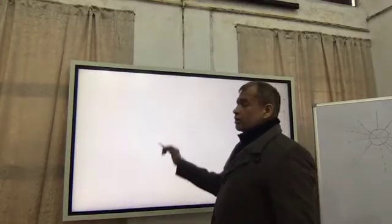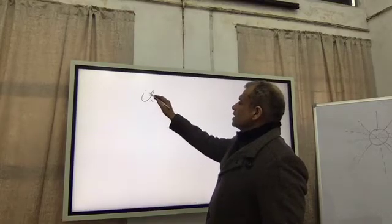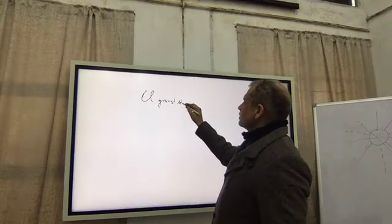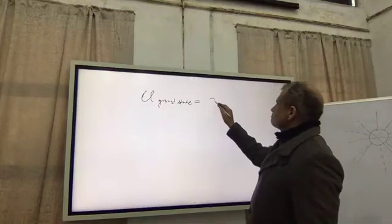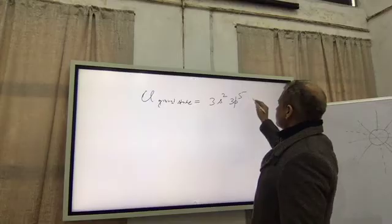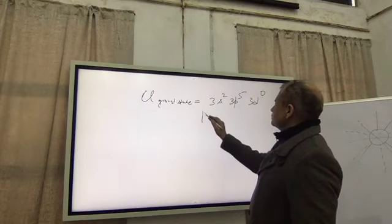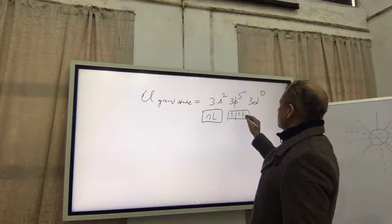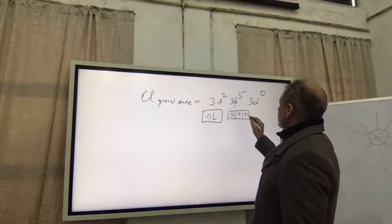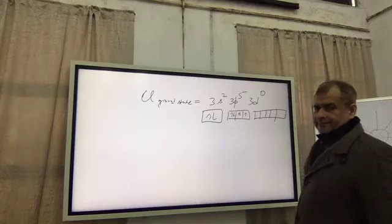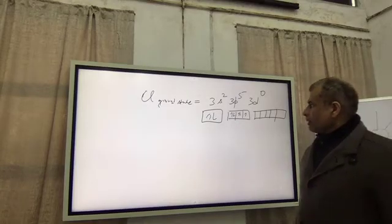After that, you draw the ground state configuration of the central atom. Here in this case it is chlorine in ground state. That is 3s2, 3p5, and 3d0. You make in block diagrams like this.